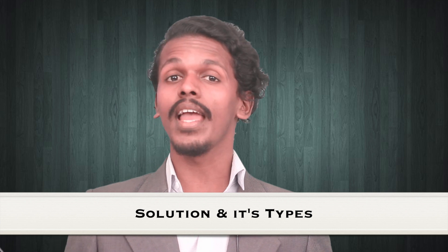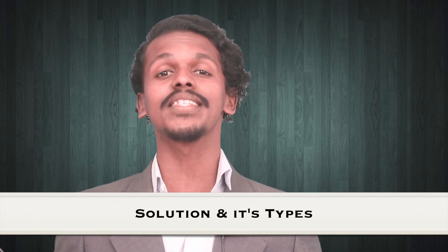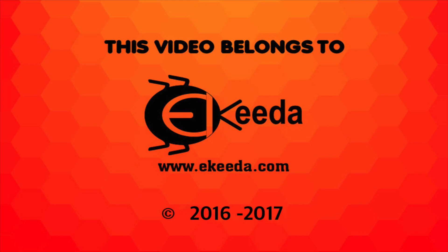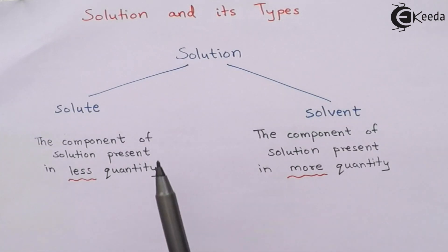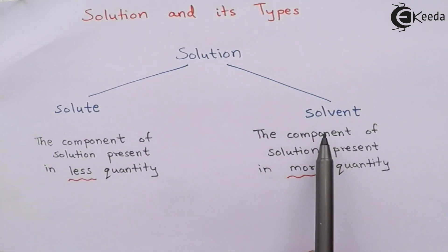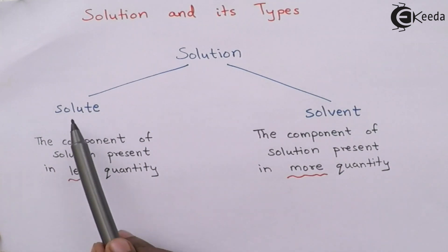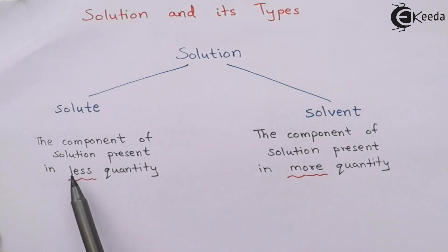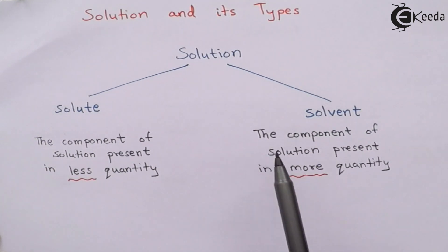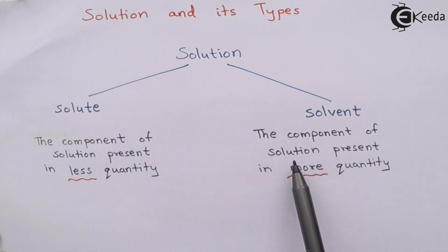Hello friends. The main topic of this chapter is solution. A solution is a homogeneous mixture of two components: solute and solvent. The solute is the component present in lesser quantity, while the solvent is the component present in greater quantity.